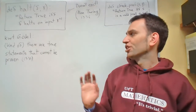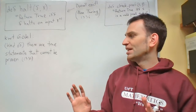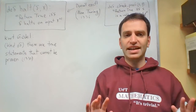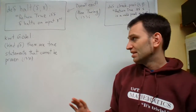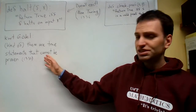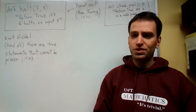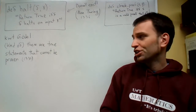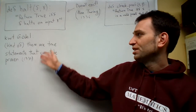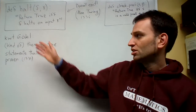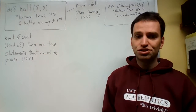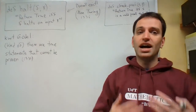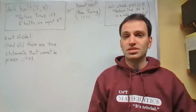There are true statements about the world that cannot be proven. A version of this result — actually a stronger one — was proven by Kurt Gödel, the Austrian mathematician, earlier than Alan Turing got his result.